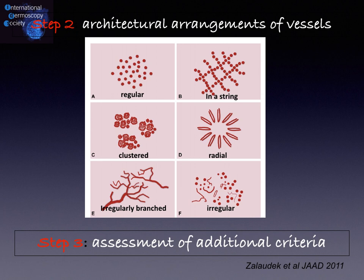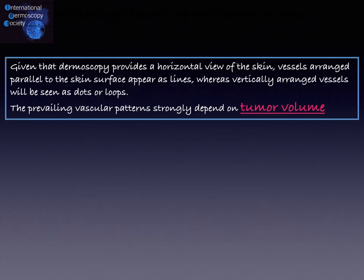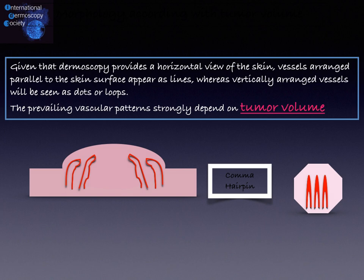Third, we need to assess four additional criteria besides vessel morphology and vessel arrangements. An important consideration is that dermoscopy provides a horizontal view of the skin. Vessels arranged parallel to the skin surface appear as lines, whereas vertically arranged vessels will be seen as dots or loops. More interestingly, the prevailing vascular patterns strongly depend on tumor volume, so looking at vessels gives us direct knowledge about tumor burden.